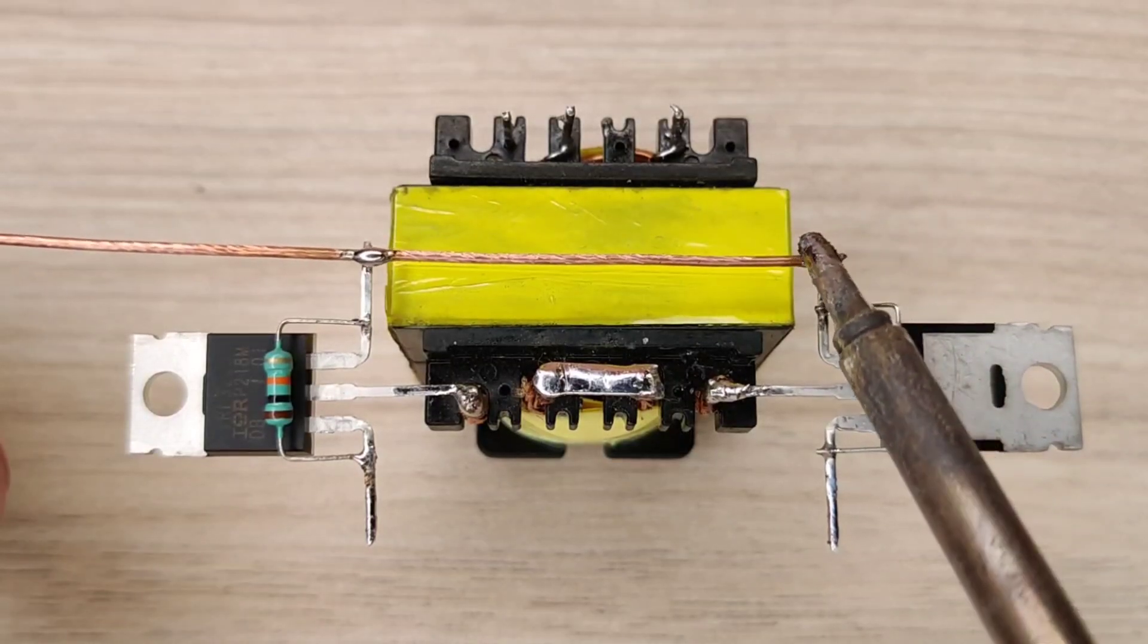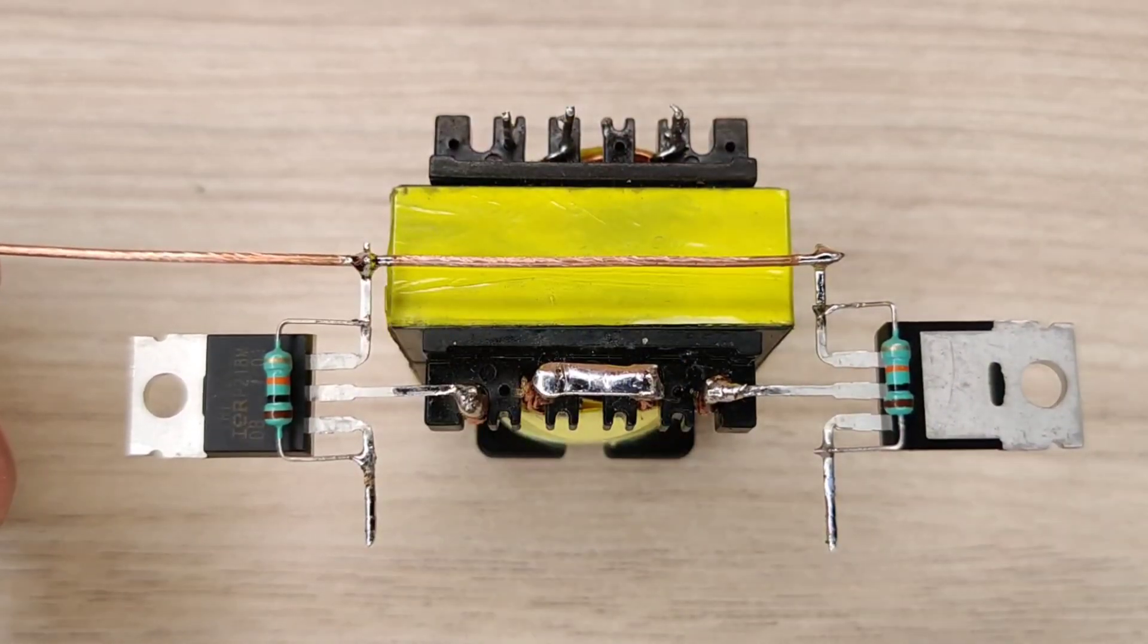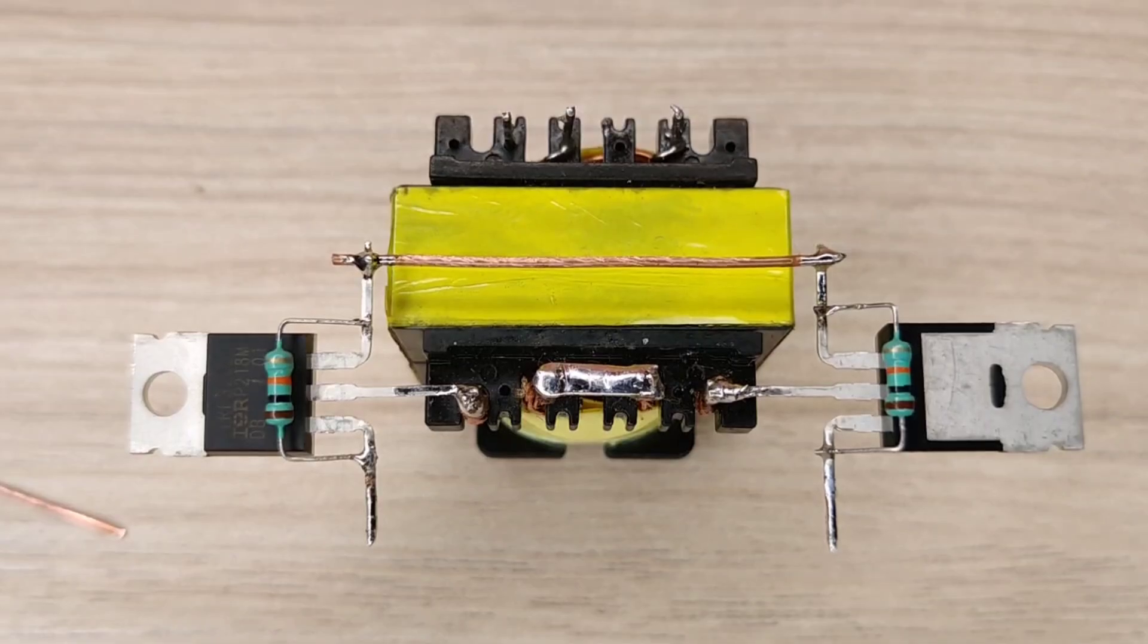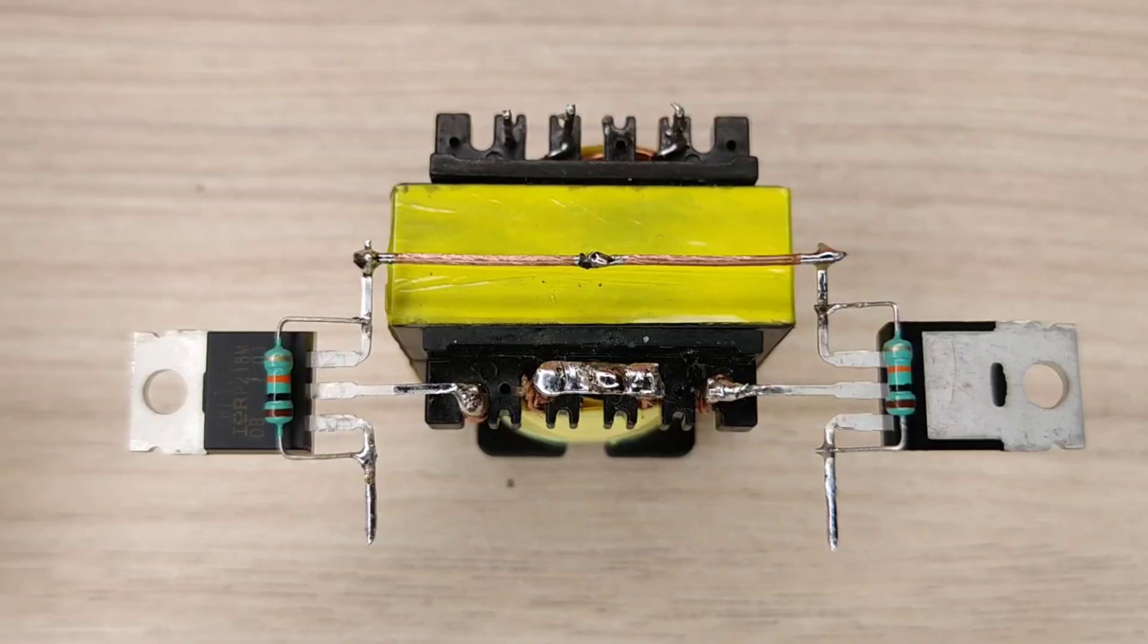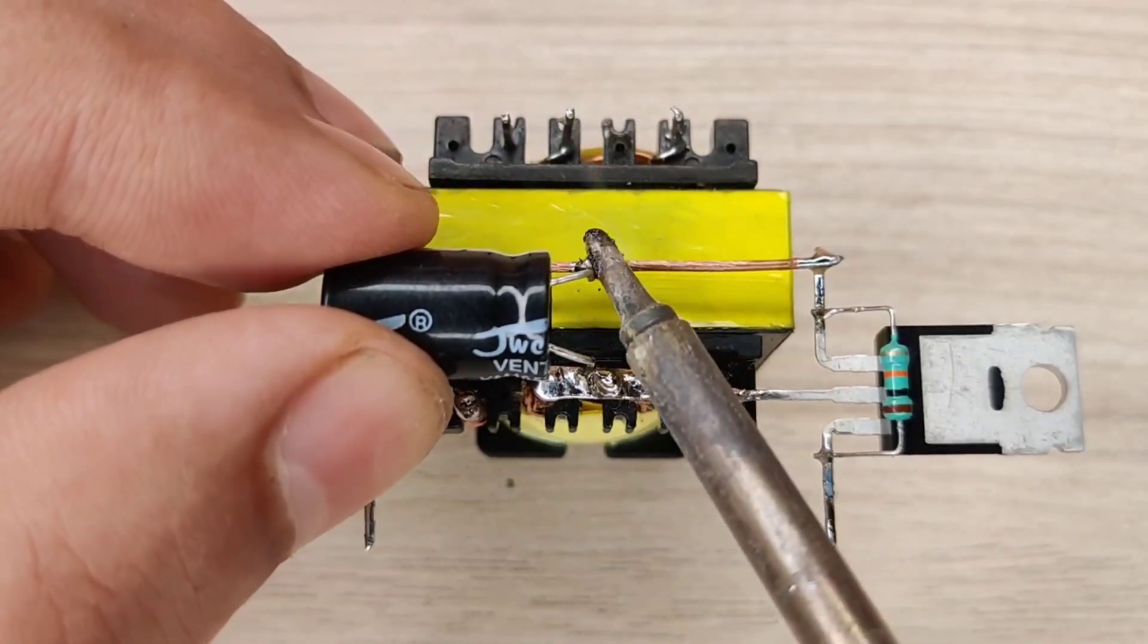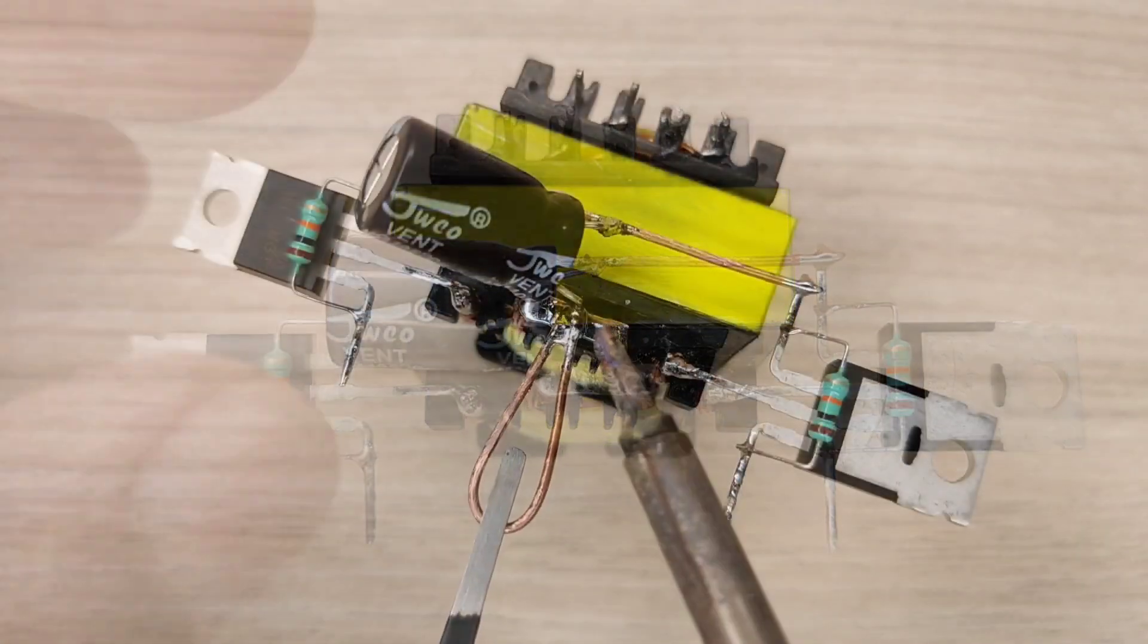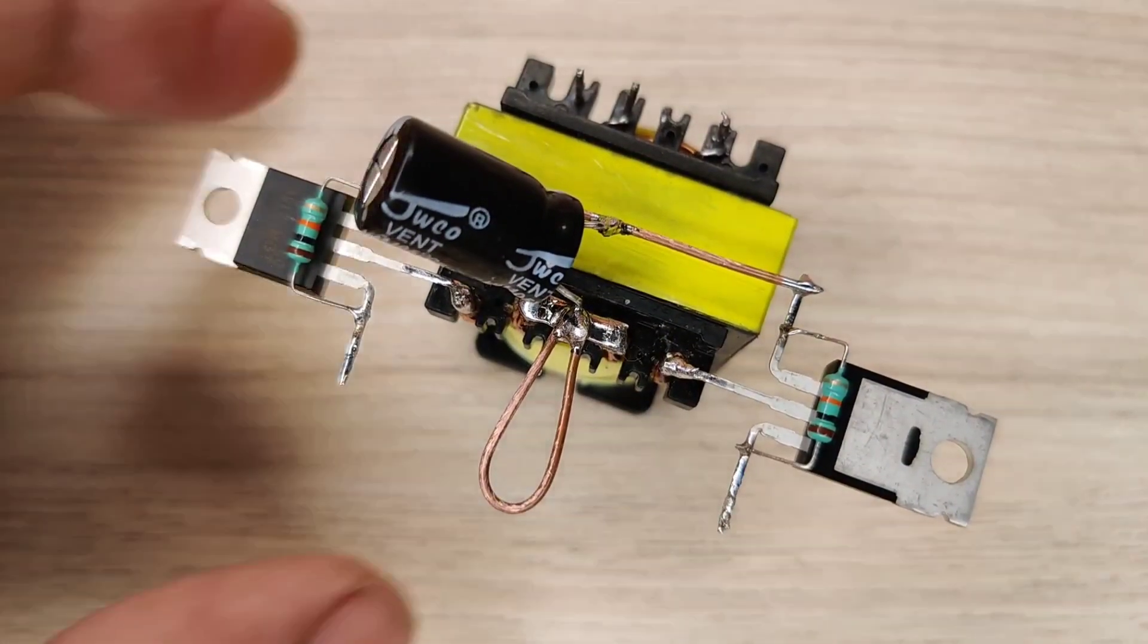Connect both source pins of MOSFETs. Solder the 1000 uF capacitor between MOSFET source and center tap of transformer. Connect the extension pins to connect DC input.